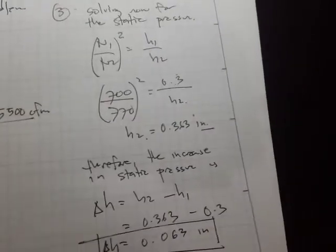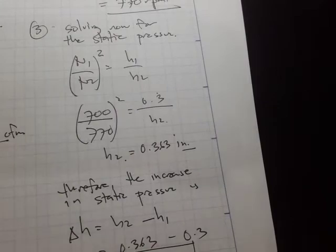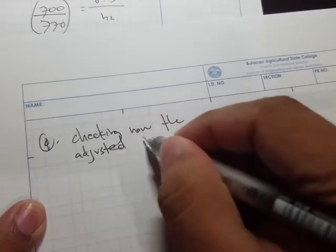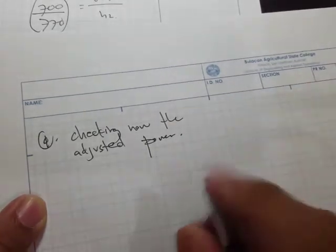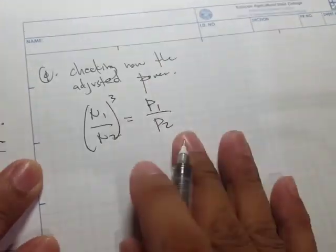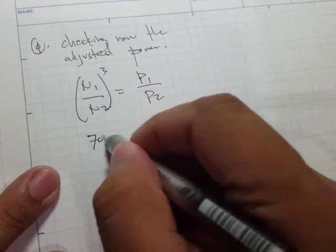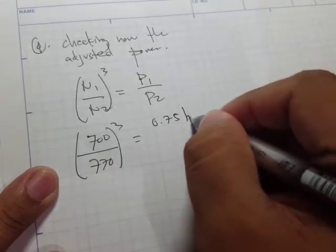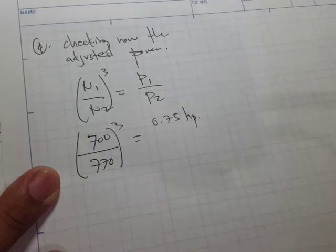Next, can the same motor be used? To check this, we need to find the adjusted horsepower. Using n₁/n₂ = P₁/P₂ raised to the power of 3: n₁ = 700, n₂ = 770, and we compare against the original fan specifications. If originally the fan has 0.5 HP specifications, then we check if 0.75 HP can accommodate the change.